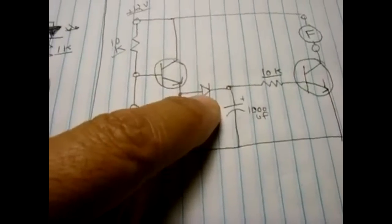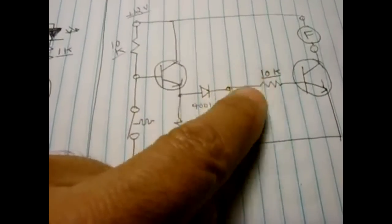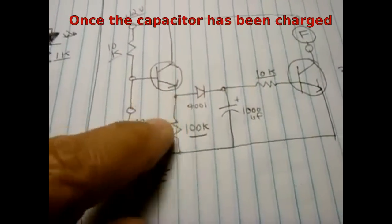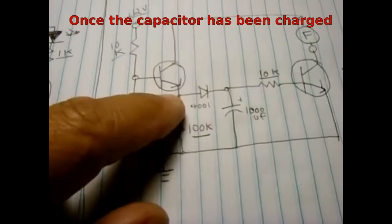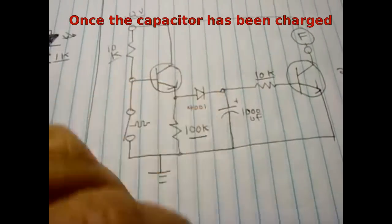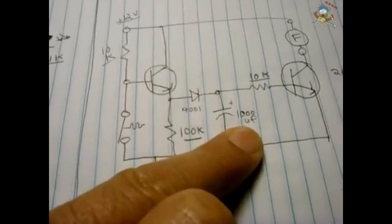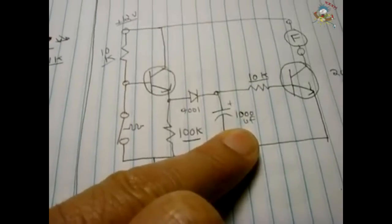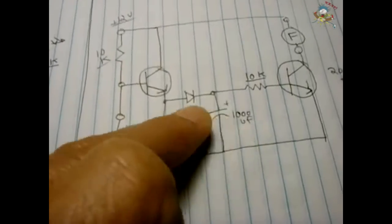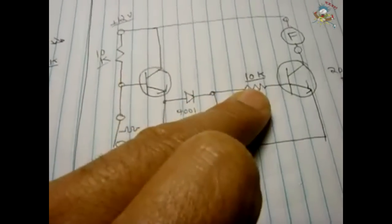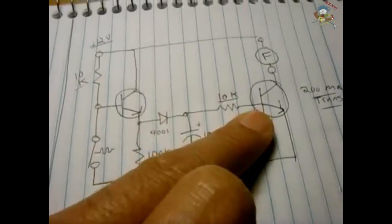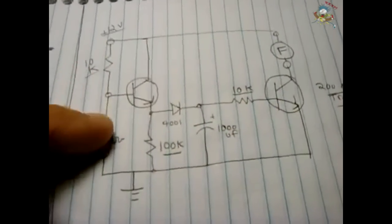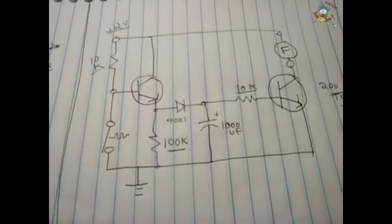You got 12 here going through a diode - the purpose of the diode is to prevent voltage on this side of the circuit draining back that way. So you have the voltage here going through the diode charging up a 1000 microfarad capacitor or even higher depending on how long you want the fan to run, and it's going to flow through a 10k into the base of an NPN.